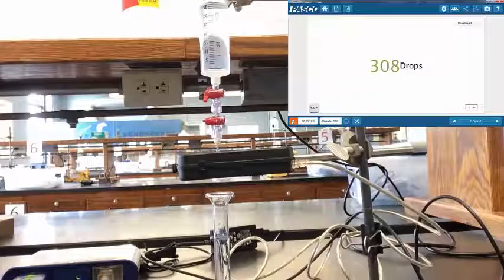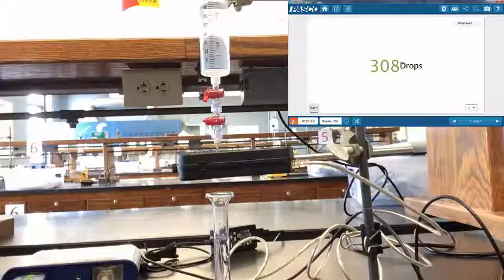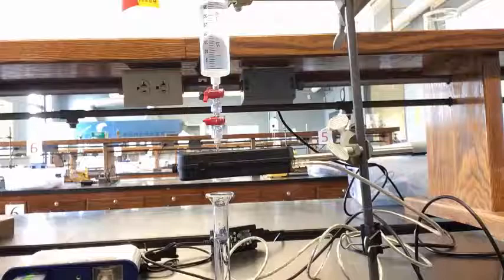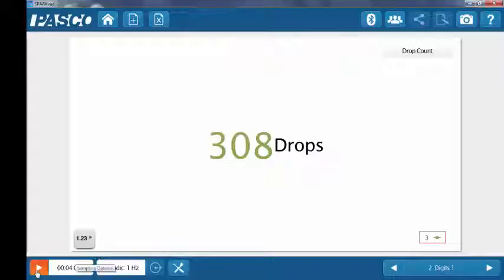Turn off the bottom stop cock when the graduated cylinder contains between 9.5 and 10 milliliters of titrant. Once the stop cock is off, press stop to stop recording data.